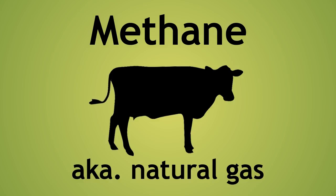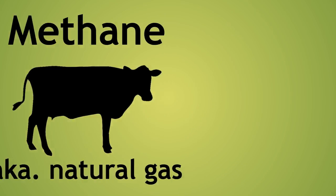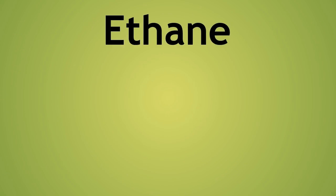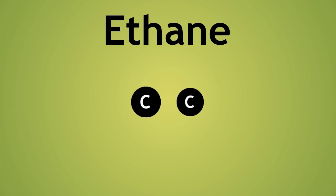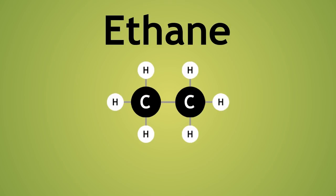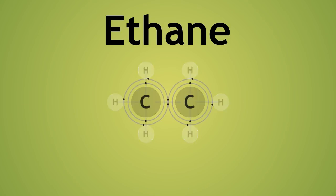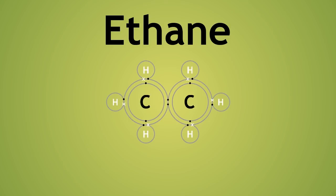The next molecule in the homologous series of alkanes is ethane with 2 carbon atoms. As you can see, a single covalent bond is formed between the 2 carbon atoms, with 6 more hydrogen atoms covalently bonded to complete the molecule.